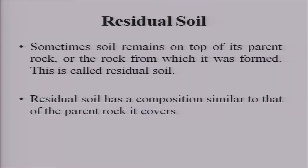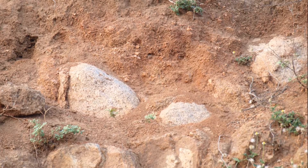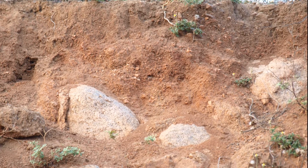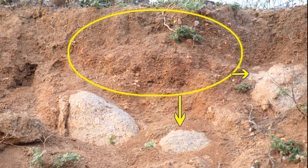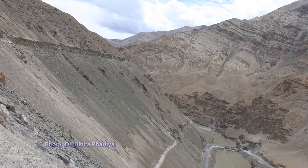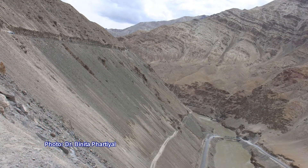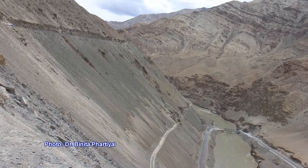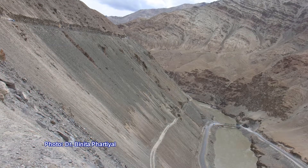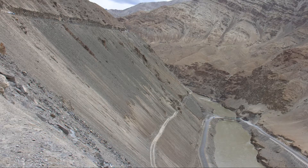There are two kinds of soil. Residual soil is that which remains in the same place after it has formed, and has a composition almost similar to that of the parent rock it covers. Transported soil, on the other hand, is soil that has been moved from its place of origin, so it has a composition slightly different from the rocks over which it is found.